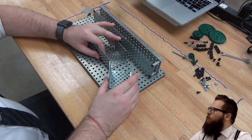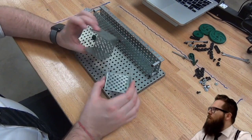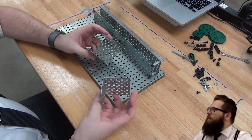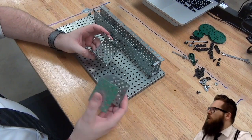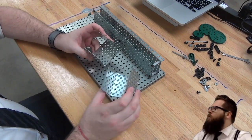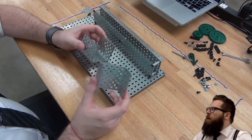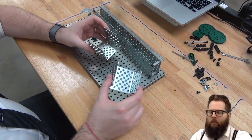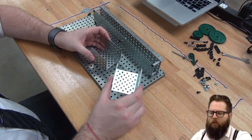Alright, the first thing that you're going to need to make sure that you have are two of these brackets. These are sometimes called gearboxes, but generally those are the smaller ones. If you have one big one and one smaller one, you'll be fine with that. You just want to make sure you have at least one big one.